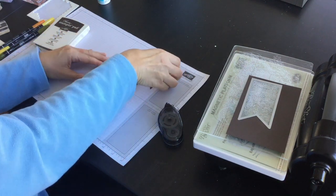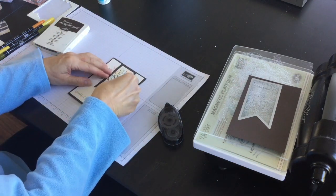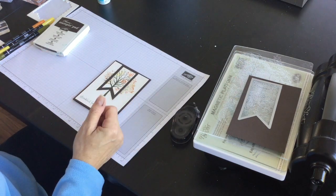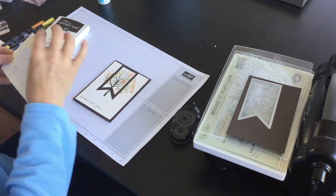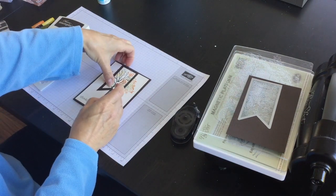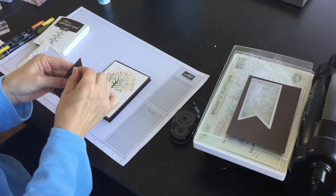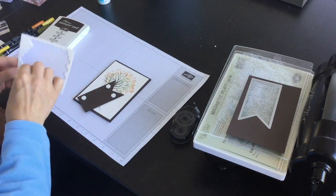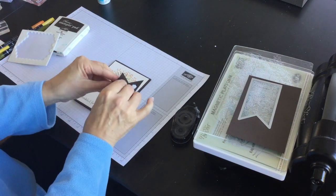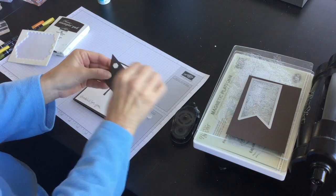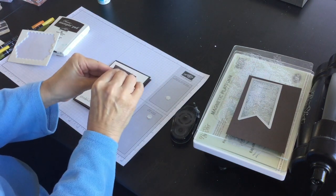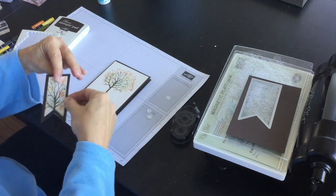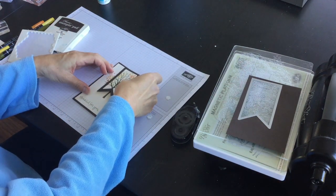And then the last thing I'm going to do is I'm going to add this to the front of my card using some stampin dimensionals. So this is my banner layer and it's just going to add really nice interesting dimension to the front of my card because my card is pretty much a clean and simple card, not a lot of details or complications to it.